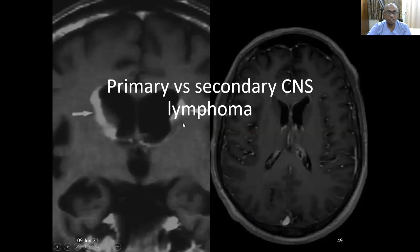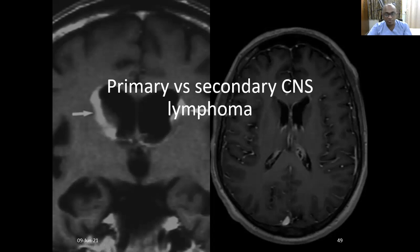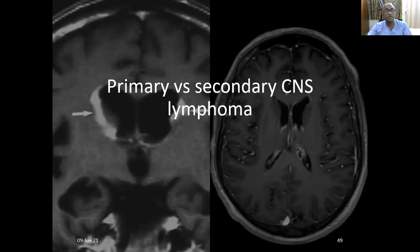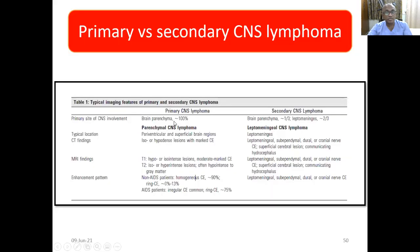Regarding primary versus secondary CNS lymphoma: most primary CNS lymphomas have parenchymal involvement. In secondary CNS lymphoma — where another systemic lymphoma spreads to the brain — there is mostly leptomeningeal involvement and ependymal seeding.